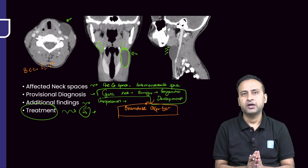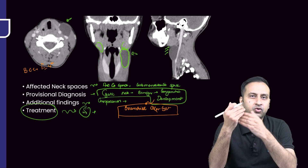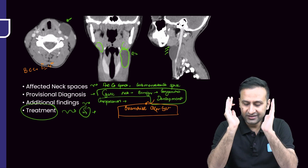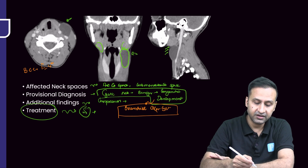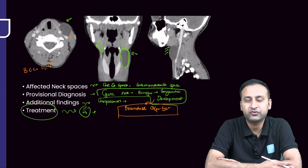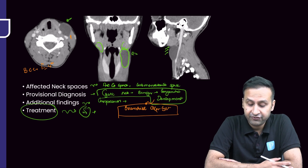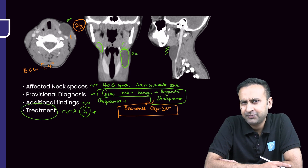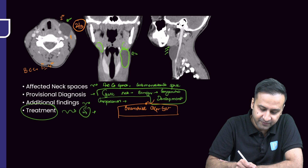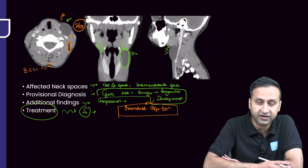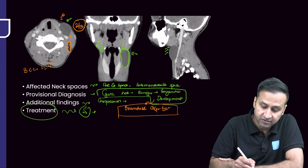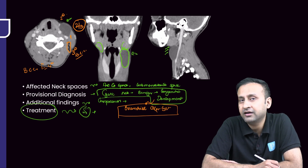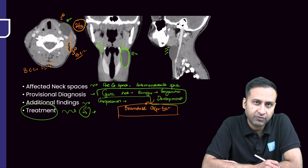You diagnose branchial cleft anomalies by looking at their locations. The easiest thing to remember: the first one is the most superior and anterior, and as you reach the fourth, it becomes the most posterior or inferior. In this case, the anomaly lies anterior to the sternocleidomastoid — and the sternocleidomastoid is a very important deterministic factor. If you find a cyst anterior to the sternocleidomastoid, the answer is the second branchial cleft cyst. If the cyst is in the posterior cervical space, posterior to the sternocleidomastoid, it is a third branchial cleft cyst. Third branchial cleft cysts are exceedingly uncommon, while second branchial cleft cysts are the commonest of all types.